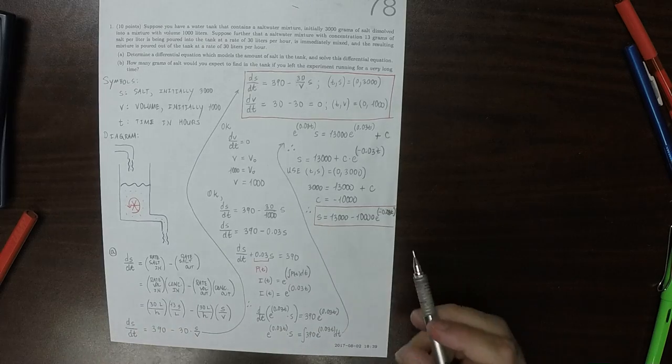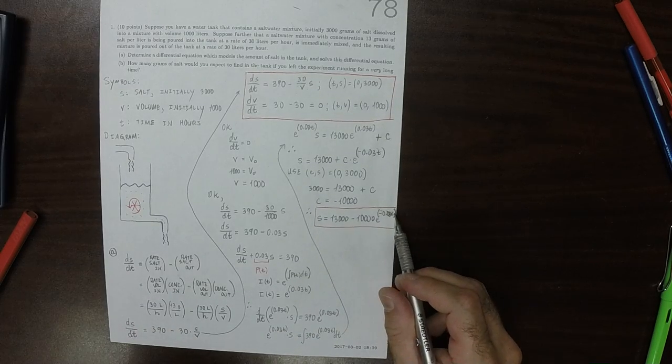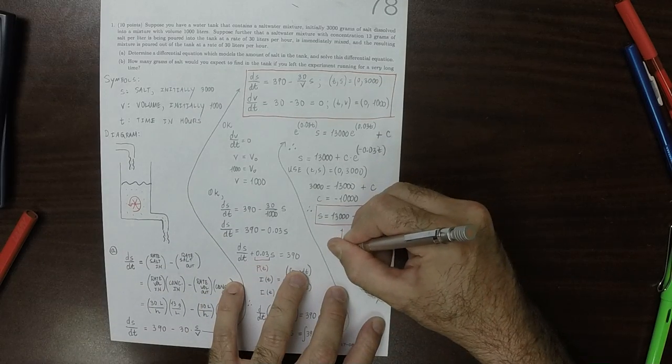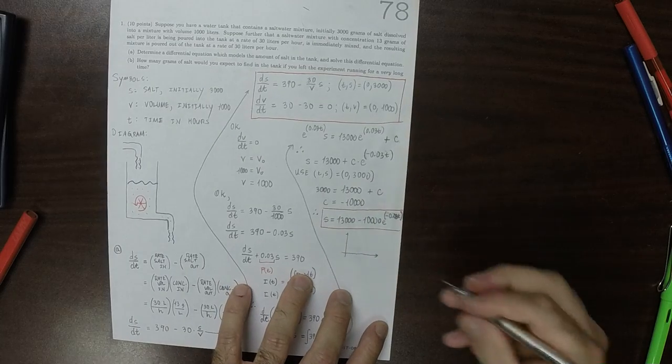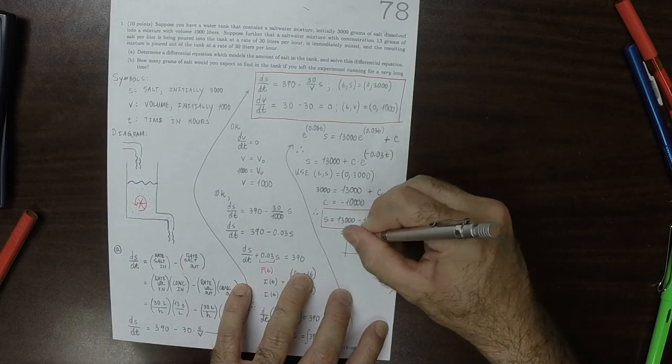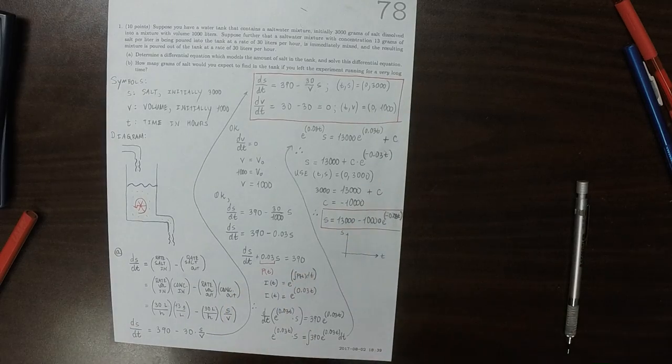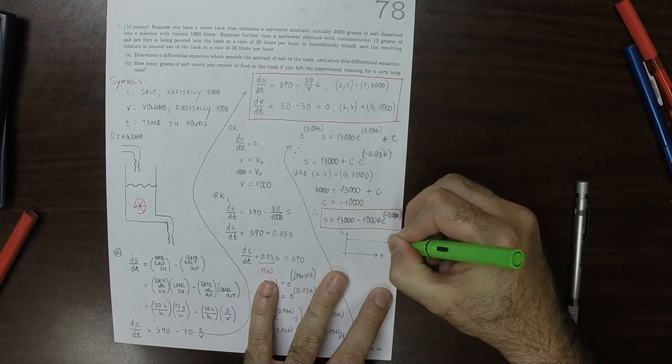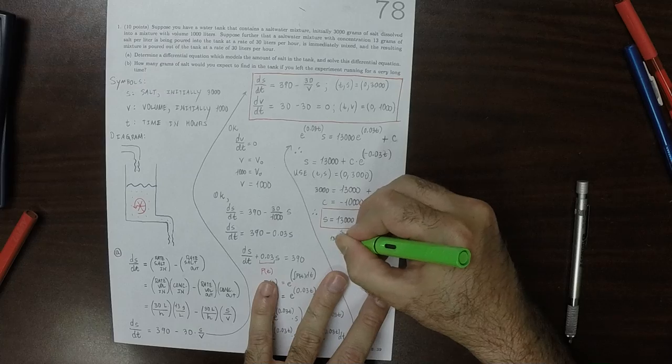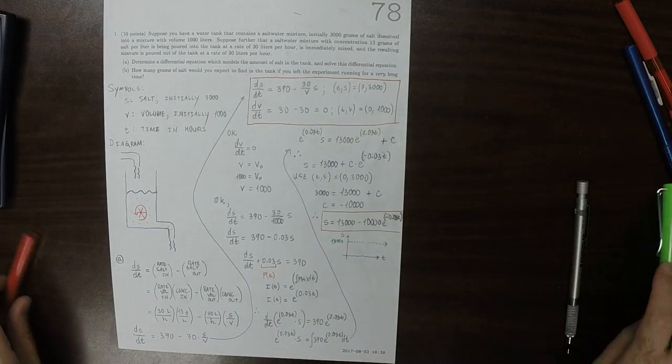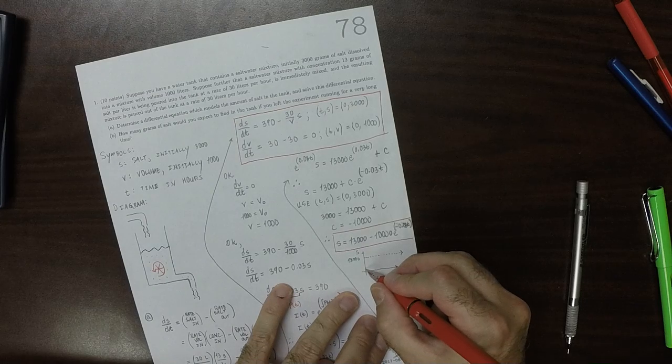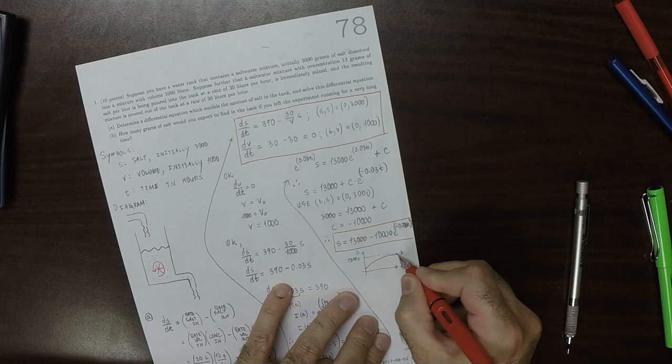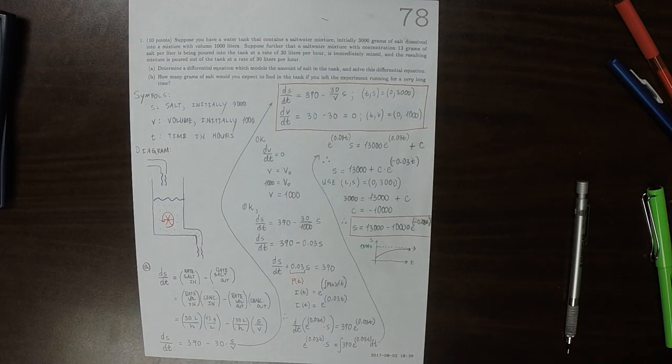So let's think, is this reasonable? So this exponential factor is going to decay. So that means that if you were to plot S versus T, so if this is S and this is T, this would be 13,000. And the amount of salt would start at 3,000 grams and level off to 13,000 grams. And that sounds right.